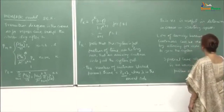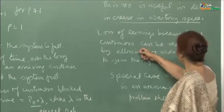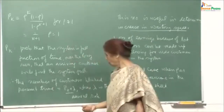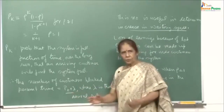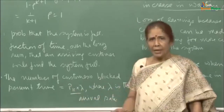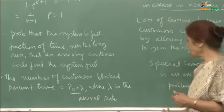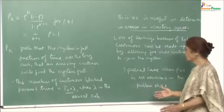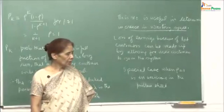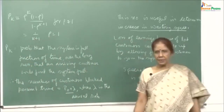This number is useful in determining the increase in waiting space. The loss of earnings because of lost customers can be made up by allowing more customers to join the system. The management has a very important guiding tool: you can find out that if you are losing that many customers per unit time, then over a day, a week, or a year — whatever your planning horizon — how many customers would have been turned away. You can then estimate the revenue you would have earned if those customers were allowed in, and compare it with the cost of increasing your services or allowing for more waiting space.